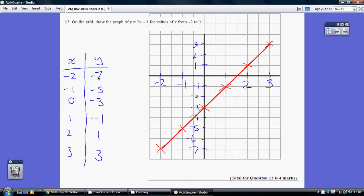So when x is minus 2, two lots of minus 2 is minus 4, take away 3 gives me minus 7, generating the coordinate (−2, −7), and so on.